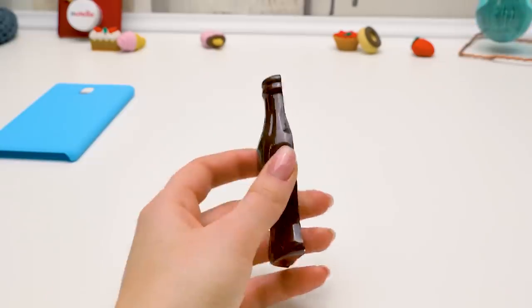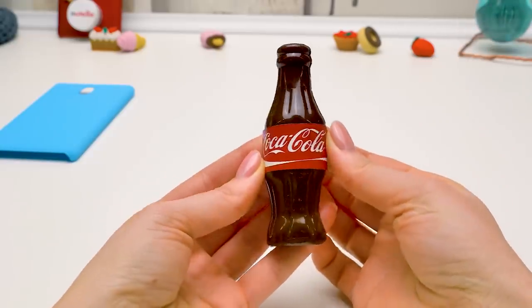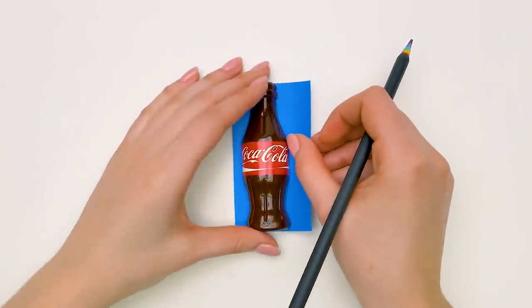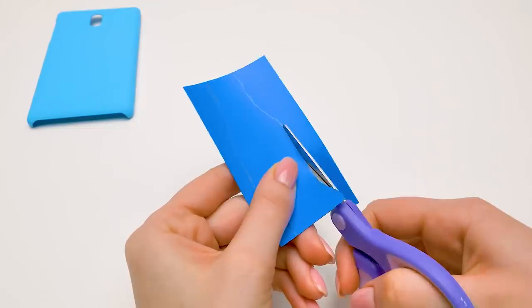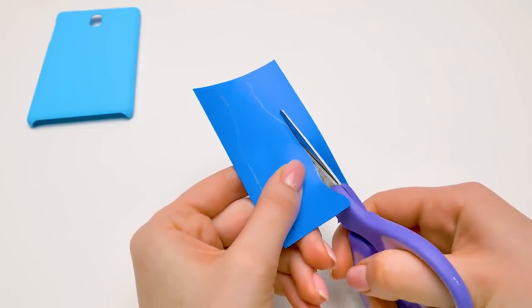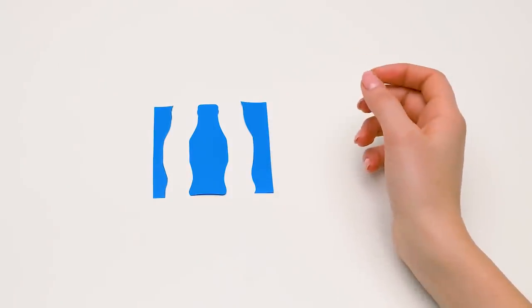To make the bottle recognizable, I'll stick a Coca-Cola label on it. I printed it on self-adhesive paper. It looks awesome! Now let's cut the base for the bottle from some soft plastic. I'll outline it first and then cut along the outline. Nice and slow. Oh, I almost forgot!